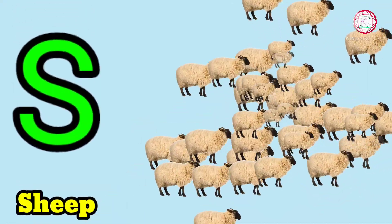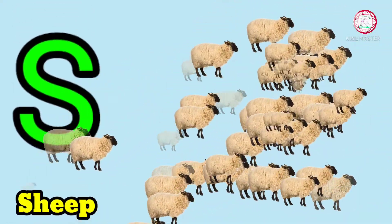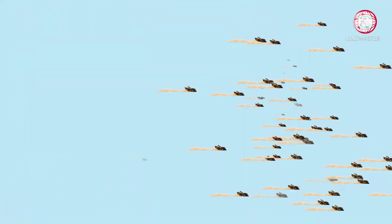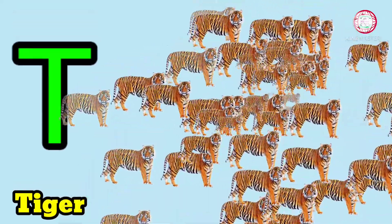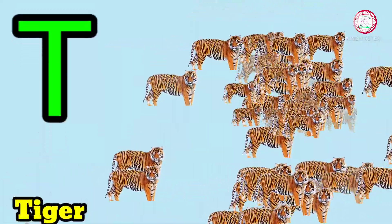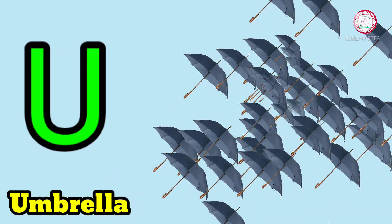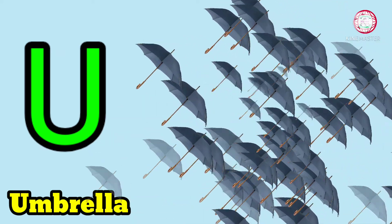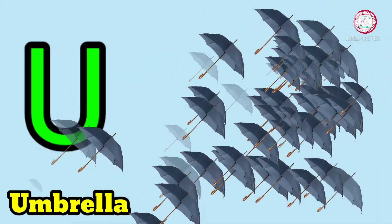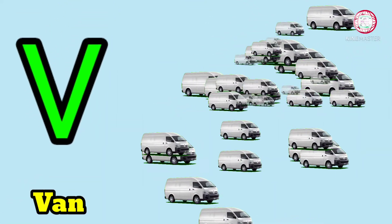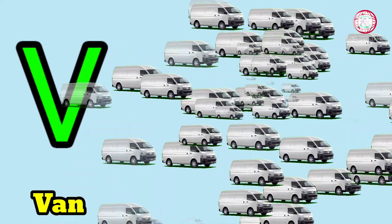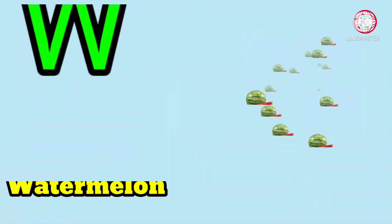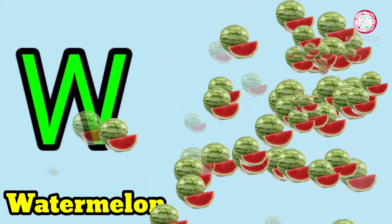S for Ship, T for Tiger, U for Umbrella, V for Vane, W for Watermelon.